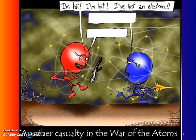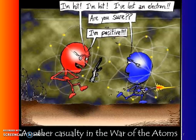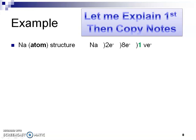Listen first, then pause the video and copy the notes. Let's look at this sodium atom. Here's the nucleus, and we have three energy levels: two on the first energy level, eight on the second energy level, and one on the third energy level. Since that's our outermost energy level, we have one valence electron.